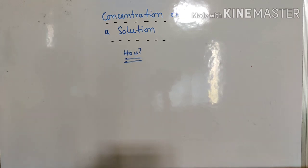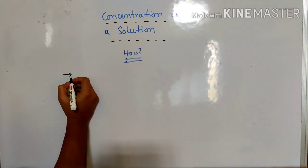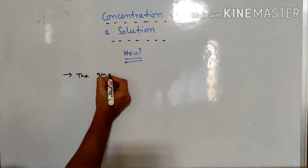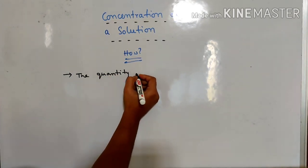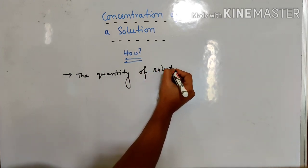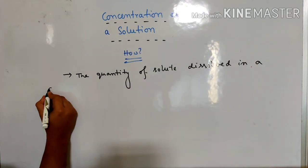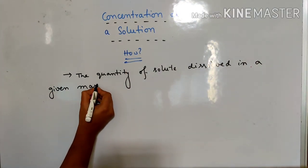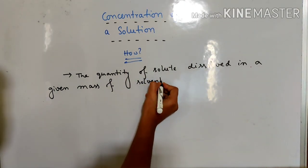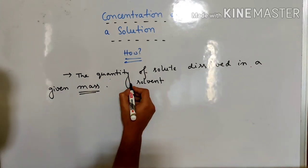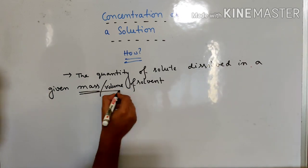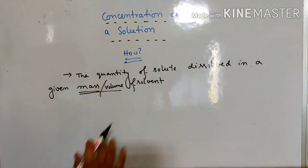We know in chemistry, most of the reactions are carried out in solutions. So in order to perform the calculations, it is necessary to know how much the concentration is, because we have to calculate at the end of the day. So it will be expressed as the quantity of solute dissolved in a given mass or volume of solvent.